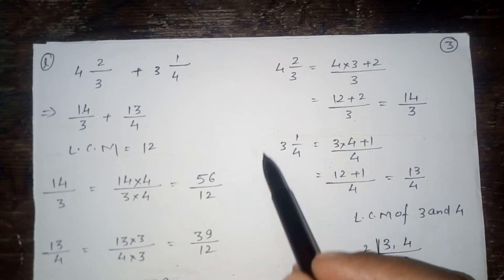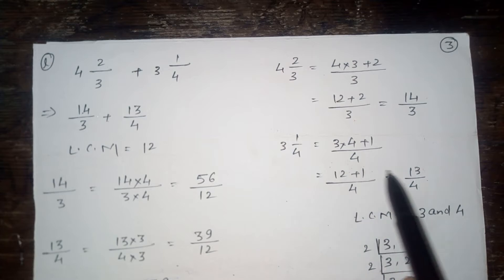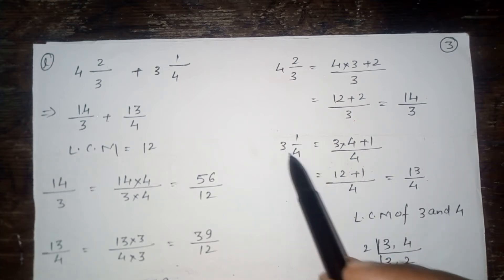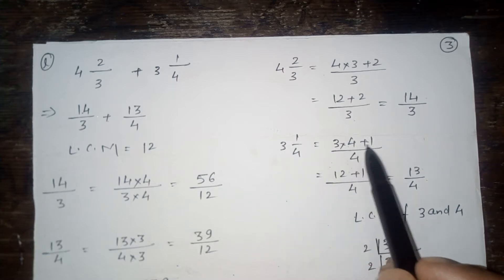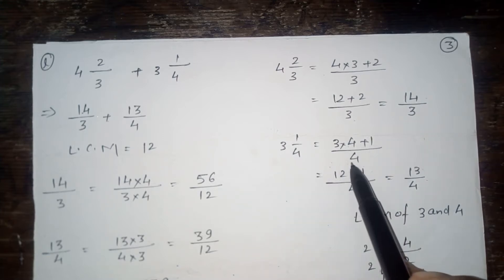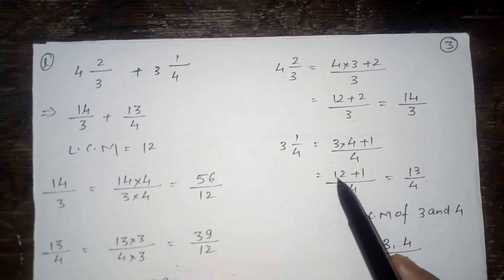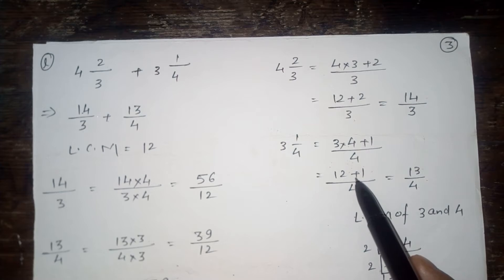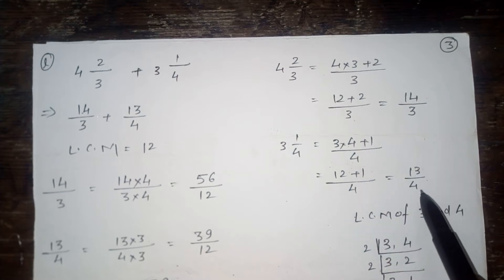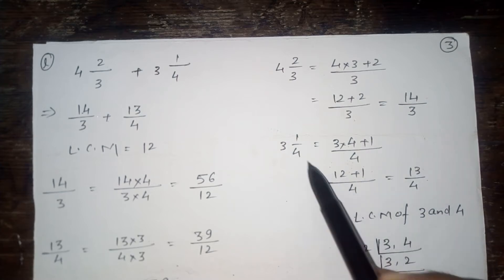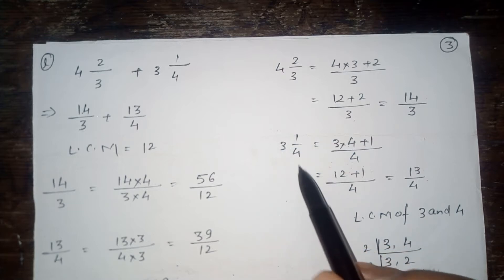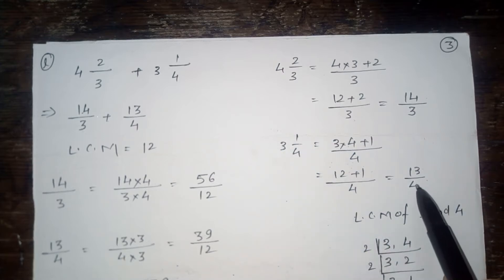And mixed fraction 3 and 1 upon 4, we will convert it to 13 upon 4. Look here: 3 multiplied by 4 plus 1 upon 4. That is 12 plus 1 upon 4, which gives 13 upon 4. Therefore, 3 and 1 upon 4 is equal to 13 upon 4.